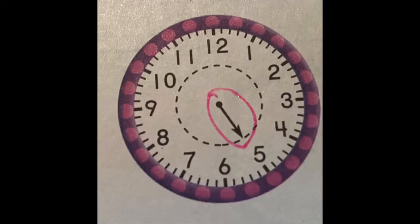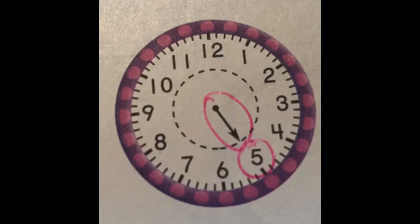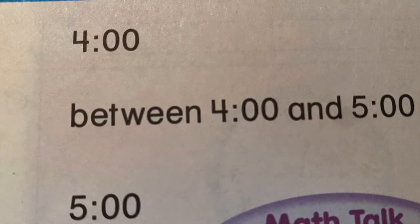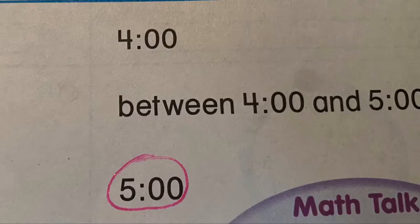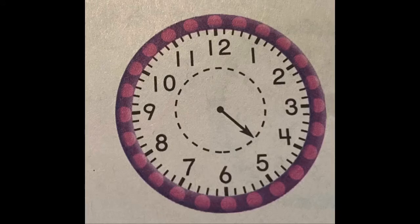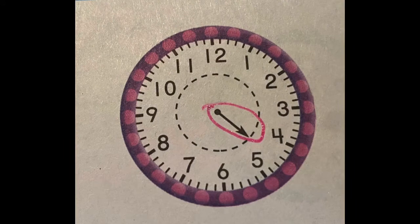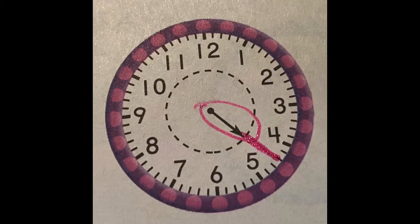What about this clock? Let's find our hour hand — there it is. What number is it pointing toward? It's pointing toward the five. So is this four o'clock, between four o'clock and five o'clock, or five o'clock? If the hour hand is pointing right at the five, it's five o'clock.